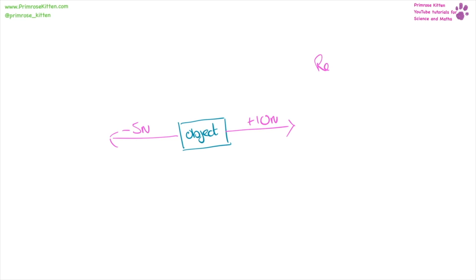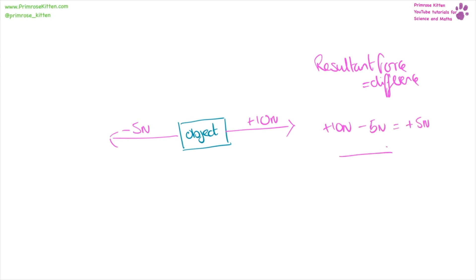If we're looking for a resultant force we need to find the difference between them. For example, here we have 10 plus 10 newtons minus 5 newtons, giving us plus 5 newtons in that direction. For the second one we have plus 2 newtons minus plus 2 newtons giving us 0 newtons as overall resultant force, so there is going to be no movement.